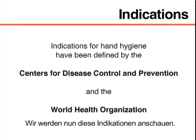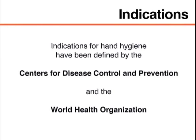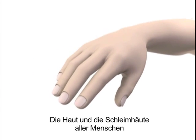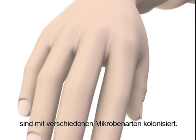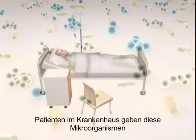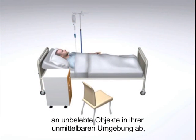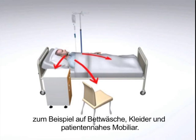We will now review these indications, beginning with some basic principles of cross-transmission of microbial pathogens. The skin and mucous membranes of every human being are colonized by various microbial species. When hospitalized, patients gradually shed these microorganisms onto inanimate objects in their immediate surroundings, for example onto bed linens, gowns, and bedside furniture.